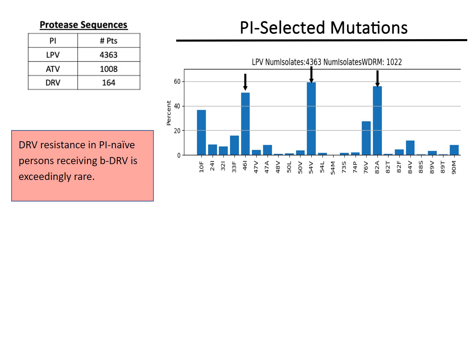These drug-resistance mutations do not cause any cross-resistance to darunavir. Other drug-resistance mutations which are associated with darunavir cross-resistance include V32I, I47A and V, I50V, L76V, and I84V, and the most common accessory drug-resistance mutations L10F and L33F, and the uncommon substrate cleft drug-resistance mutation I50V.